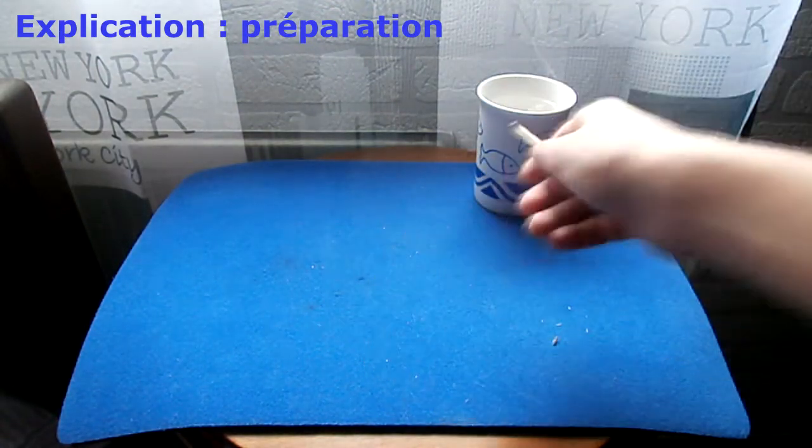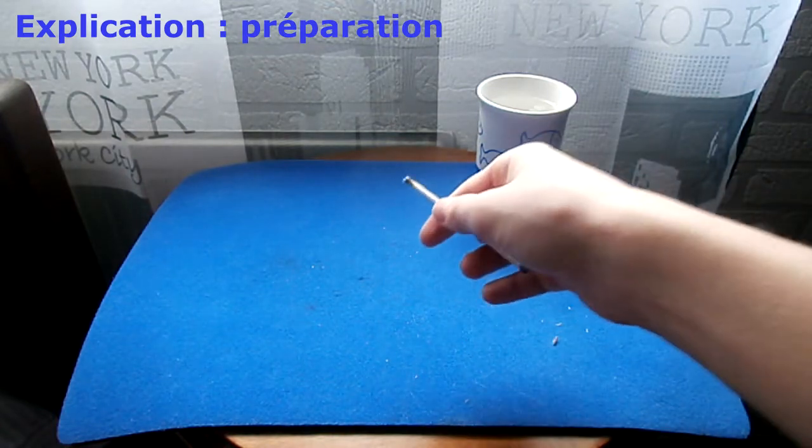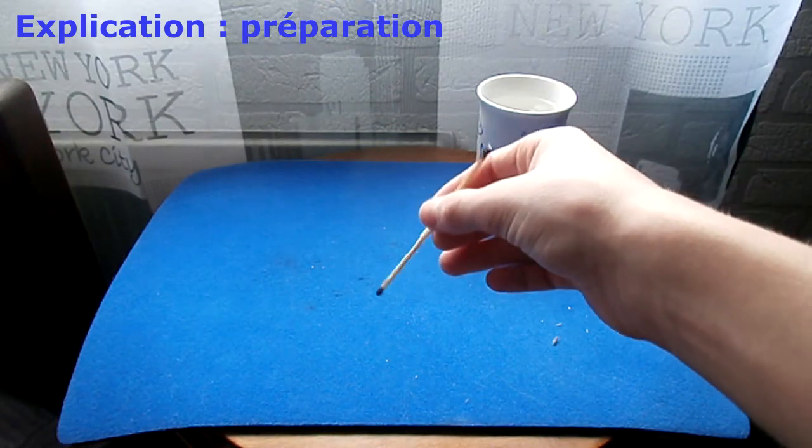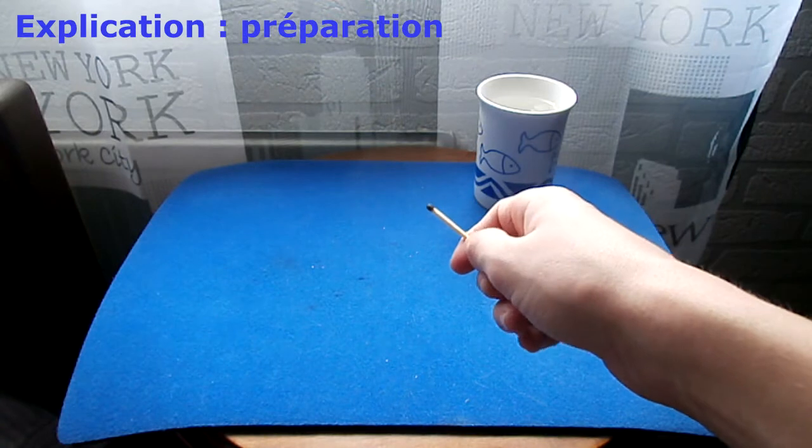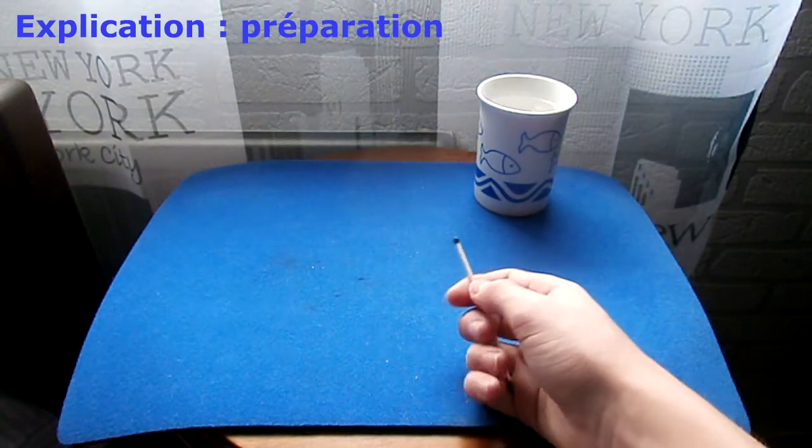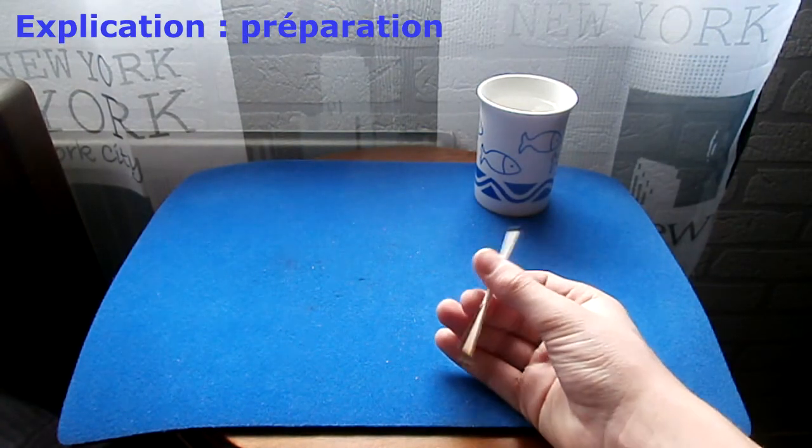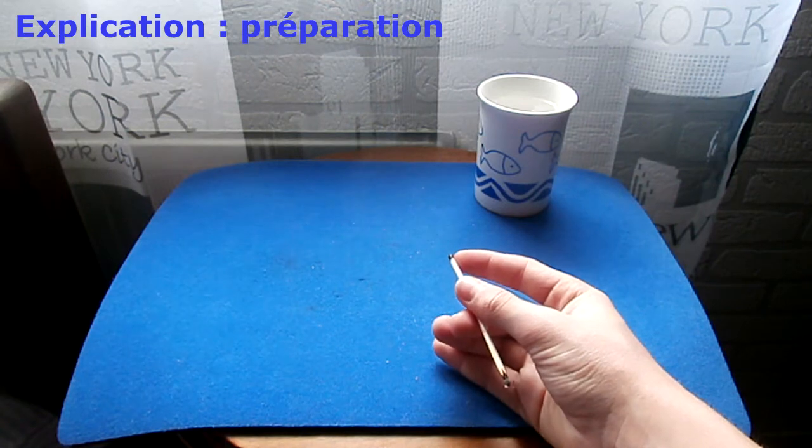Et là, en un mouvement, vous allez, en fait, pivoter pour récupérer l'autre allumette. Et vu qu'on a colorié en noir, ils vont croire que c'est exactement la même, en fait.